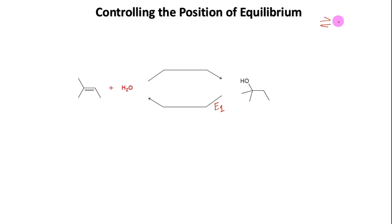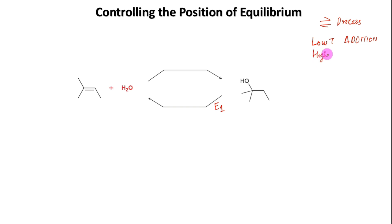Most reactions represent equilibrium processes. Organic chemists generally draw equilibrium arrows only in reactions where equilibrium can be easily manipulated, and acid-catalyzed hydration is an excellent example of such a reaction. In the lecture on reactivity of alkenes, thermodynamic parameters were presented to explain why low temperature favors addition while high temperature favors elimination. But in acid-catalyzed hydration there is yet another way to easily control the equilibrium.